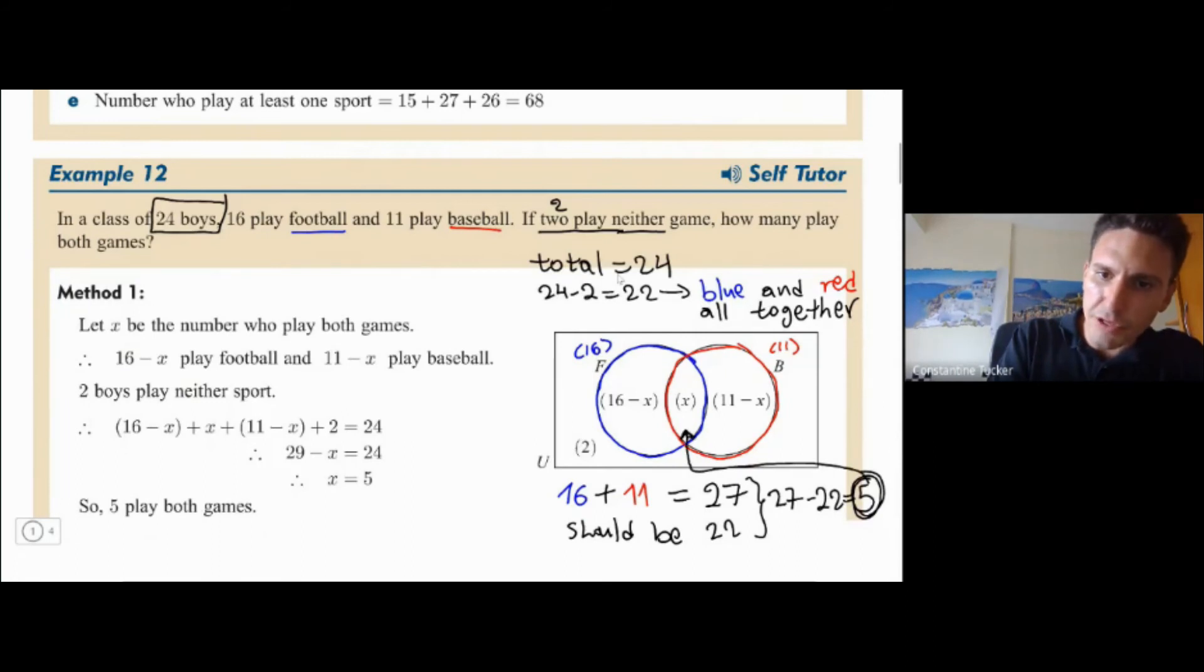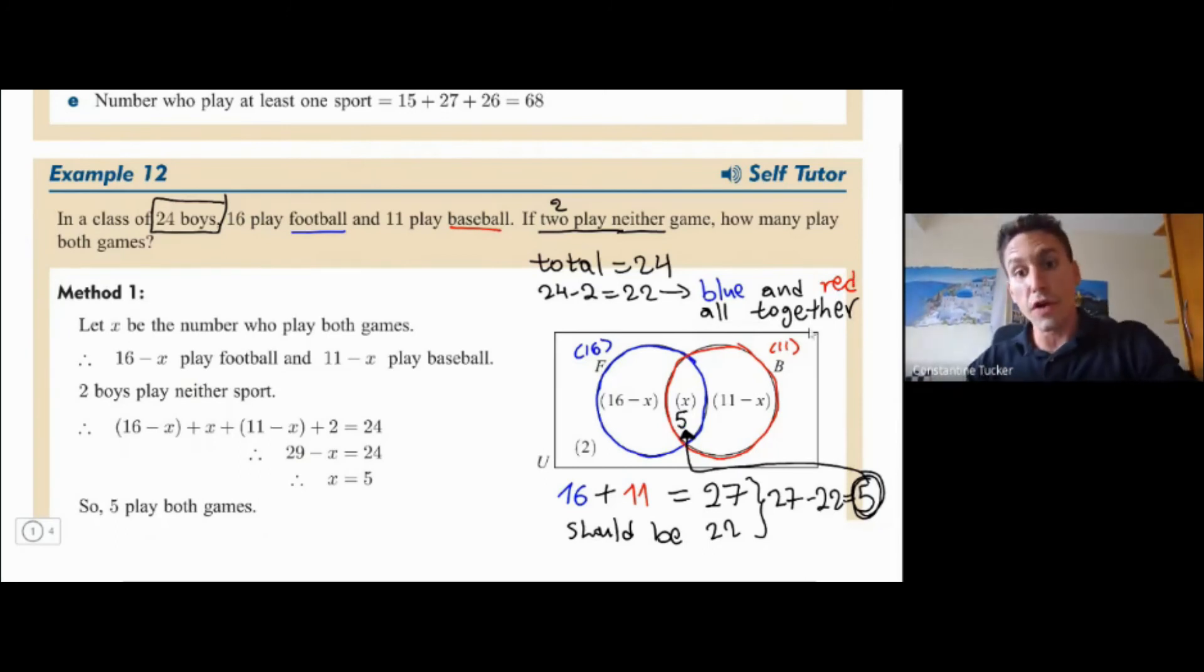Now, this very often happens in Venn diagrams. We have the number in the middle, that five, notice how that five counts for football, and it also counts for baseball. So that's why when you add these two up, you always get something extra because the middle bit has been counted twice. So keep this trick in mind.